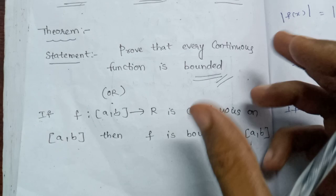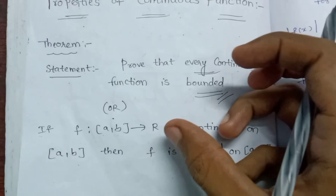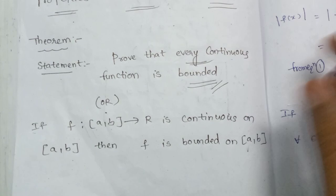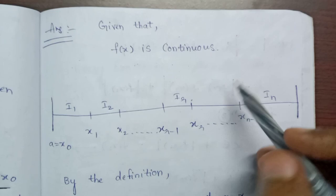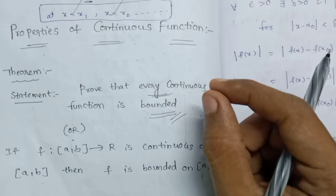Every continuous function is bounded. So, the function is bounded. Let's see what a or b is — it is not bounded, so if we get bounded it will get bounded. Given that f of x is continuous, if we know how to prove that every continuous function is bounded, we will note that every function is continuous. If we find it, we will be bounded.